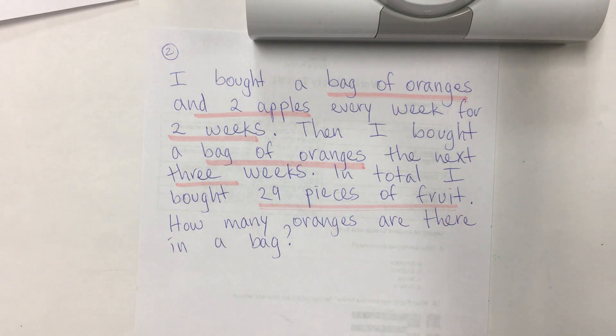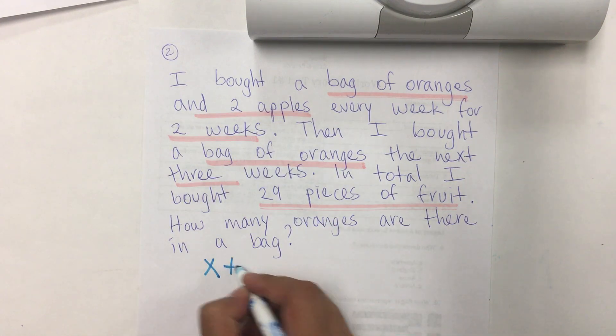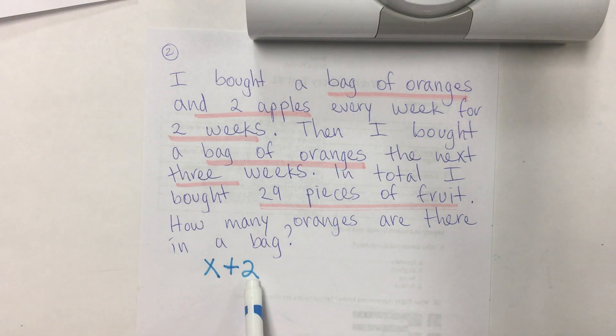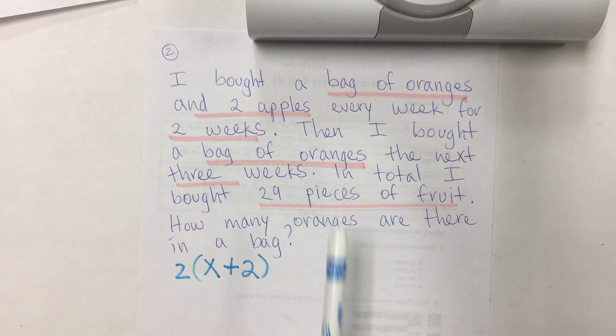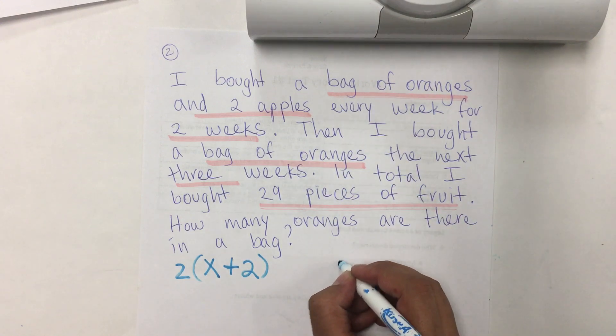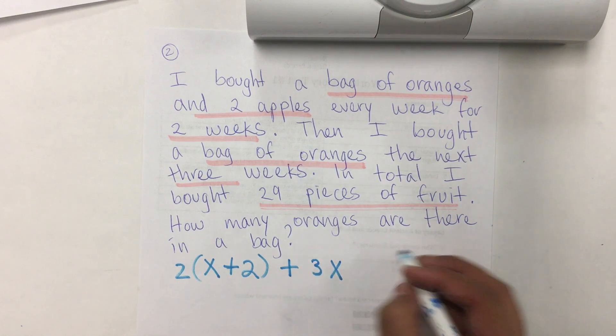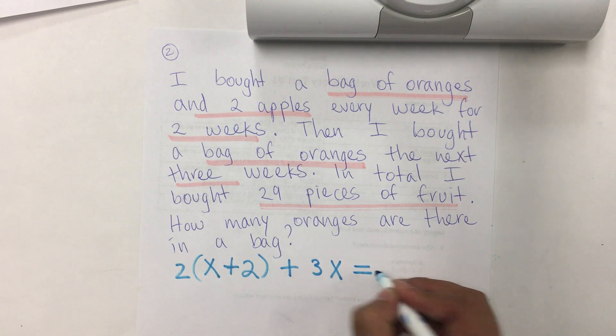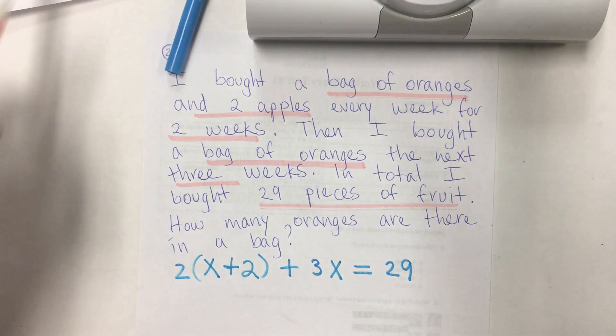So, I'm going to write a bag of oranges that will be x and two apples that will be plus 2 because we know how many apples there are every week for two weeks. That means that I buy these for two weeks. Meaning, I'm going to multiply by 2. Then, I bought a bag of oranges the next three weeks. More oranges. So, it's going to be the same x. But, it's going to be multiplied by 3 because we have three weeks. And, that's going to be equals to 29 pieces.